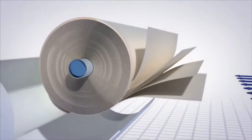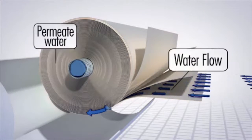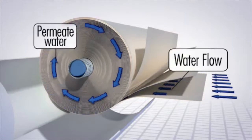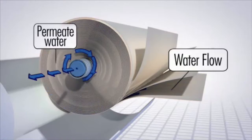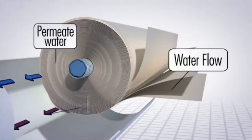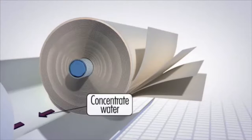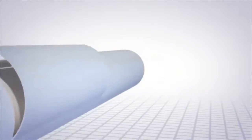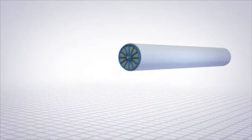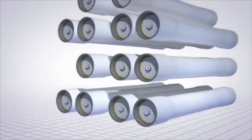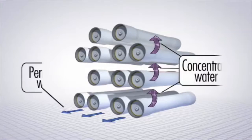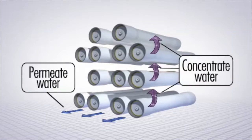Two streams of water are produced. Pure clean water, or permeate, flows across the membrane sheets and passes through the membrane layers to the inside core tube. Water that does not permeate becomes more highly concentrated with salts and other substances. This water is called concentrate. The pure permeate water flows out the core tube at one end of the pressure vessel, and the concentrate water flows out another outlet.